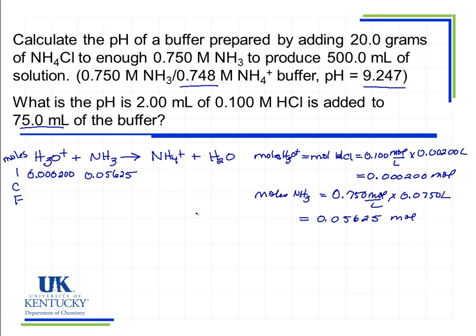Before this reaction takes place, there's still some ammonium present because it's a buffer. I'll calculate how much ammonium we're starting with by taking the molarity, which we determined in the previous example, and multiplying by 75 milliliters or 0.075 liters. This gives 0.0561 moles.